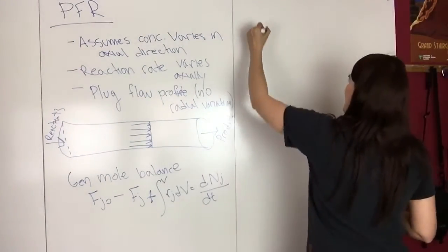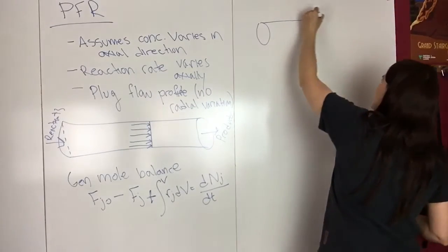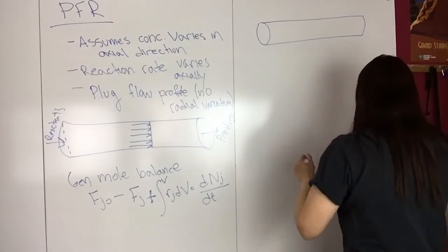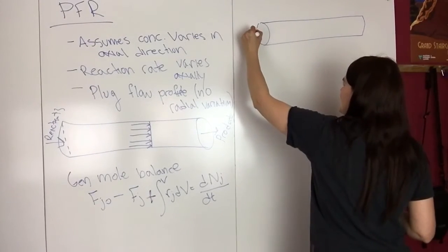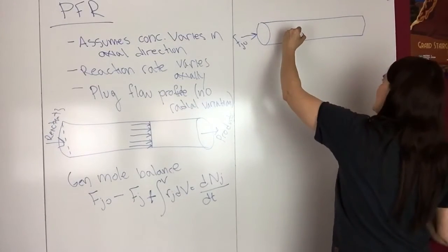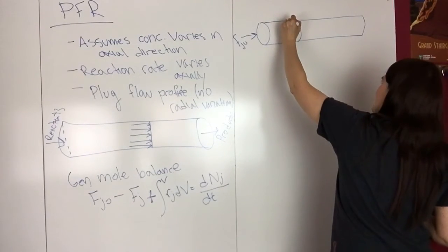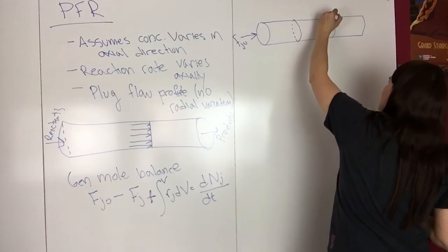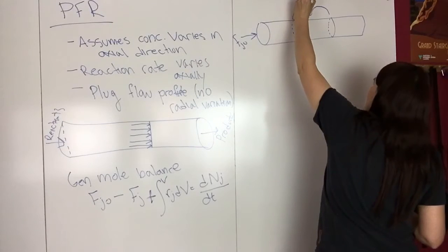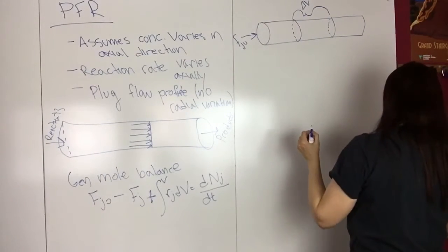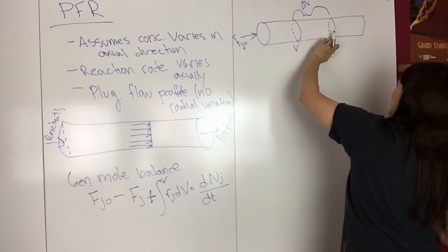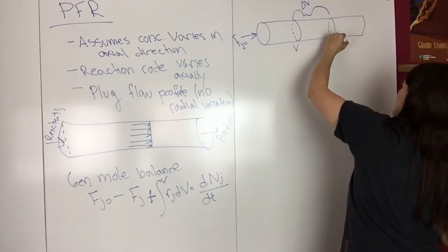I'm going to draw the reactor again. We have a molar flow rate in, F_J0, and looking at a section of the reactor, this is delta V. We have V and V plus delta V.